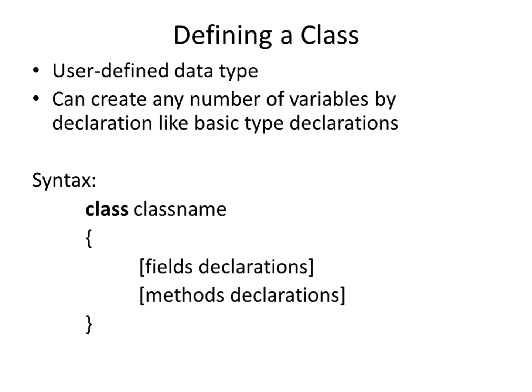Now we are going to see how we define a class. Generally, a class is called a user-defined data type. We are aware that data types are of two types: built-in data type and user-defined data type. We know the built-in data types — integer, float, character, and so on. If you want to create a user-defined data type, we can create it as a class.